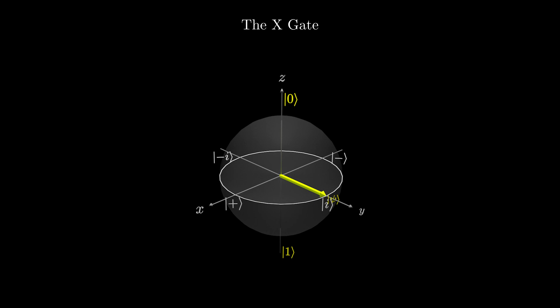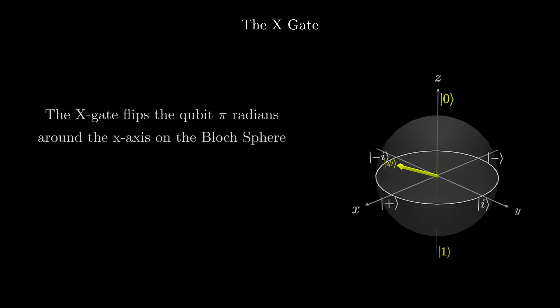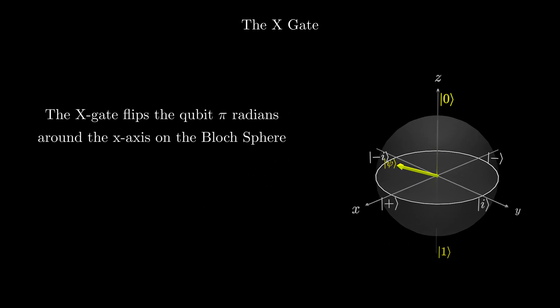Let's try a qubit that is halfway between 0 and 1. Try and see if you can figure out what the X gate is doing. Let's try a qubit in this state. As you can see, the X gate flips the qubit 180 degrees or pi radians around the X axis.